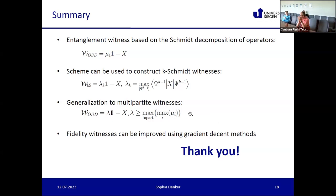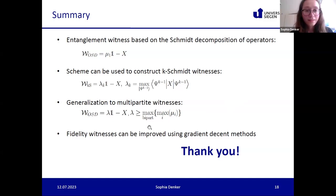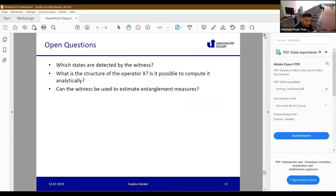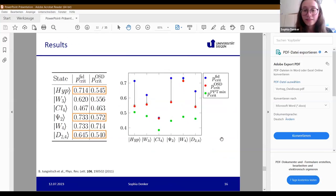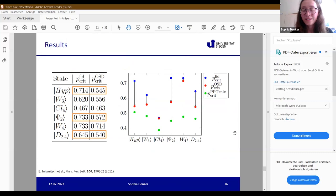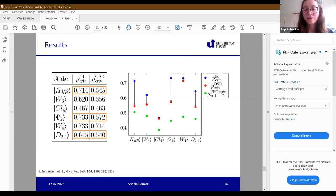During the Q&A, a question was raised: in the results slide showing OSD is improved but still below PPT mixtures, is there any advantage in using the OSD compared to PPT? The answer given is that the OSD witness can detect states that the PPT mixture method cannot — for example, some PPT states (states with positive partial transpose) are not detected by PPT mixtures but may be detected by the OSD witness.